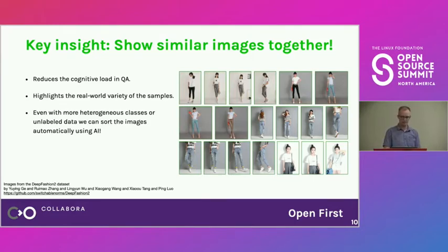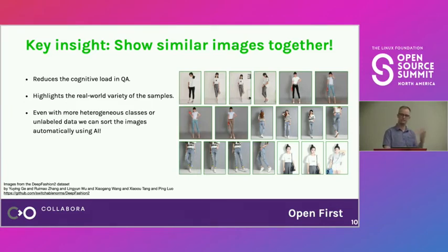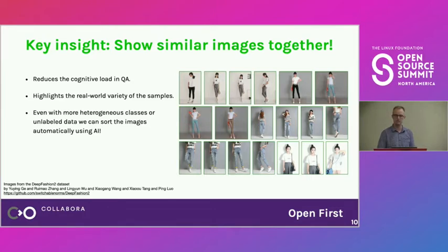It helps you highlight the real-world variety of the samples, so you can see a big sample of a particular class and identify sub-clusters — what's actually in the data. In the case of traffic signs it may seem trivial, but there are much more difficult examples where it's hard to figure out what the label really means, especially if you're not deeply familiar with the data yet.